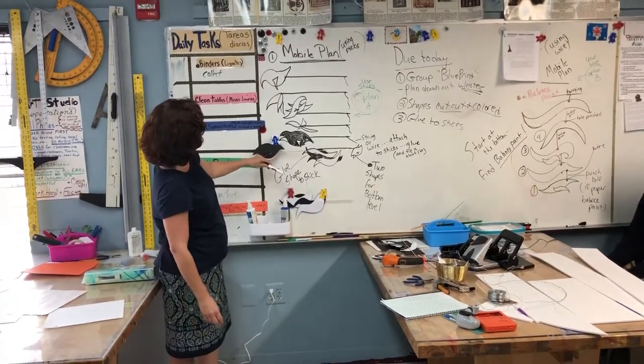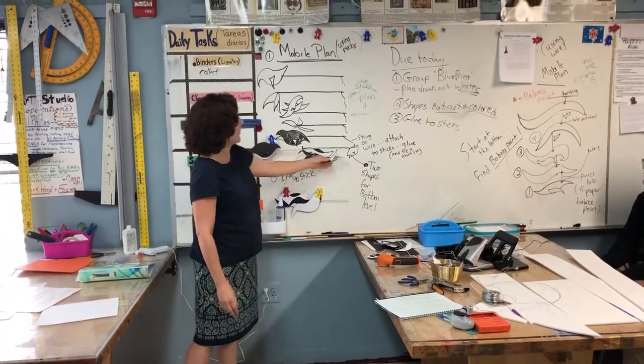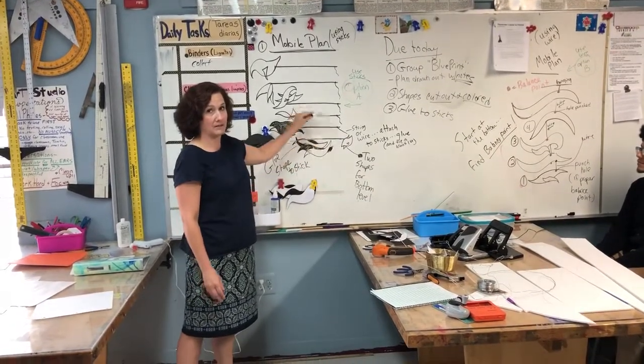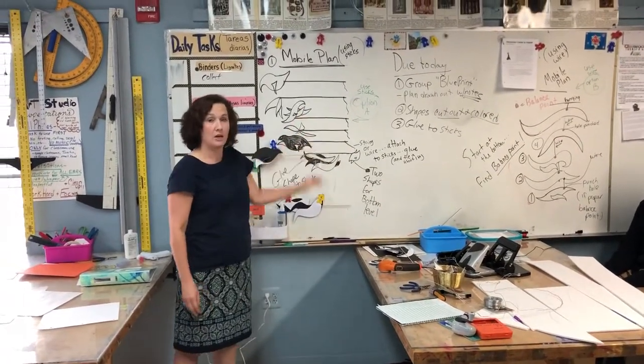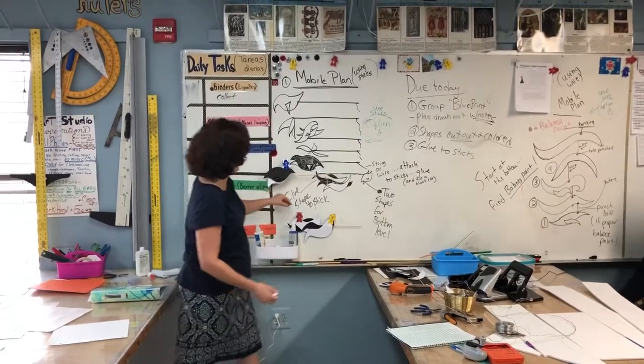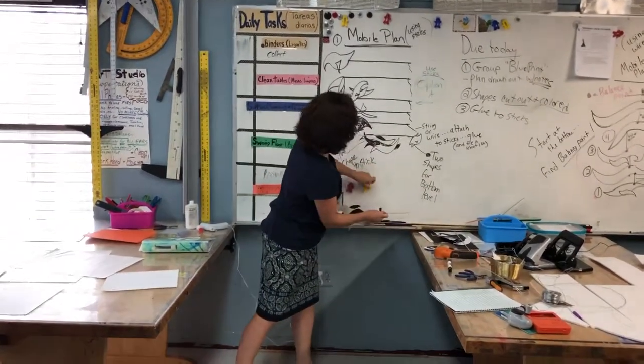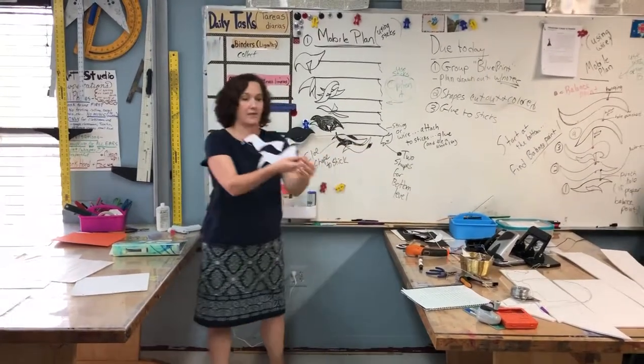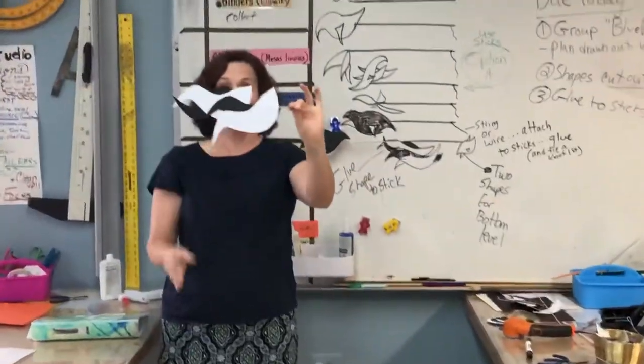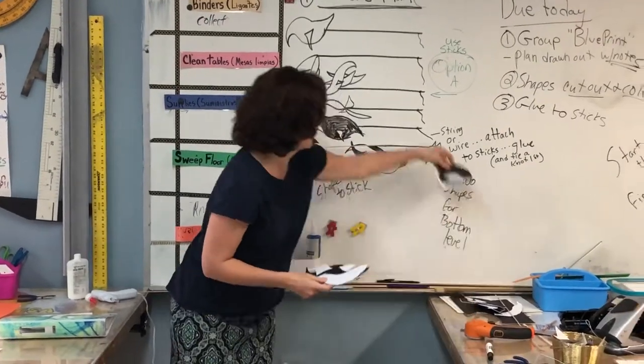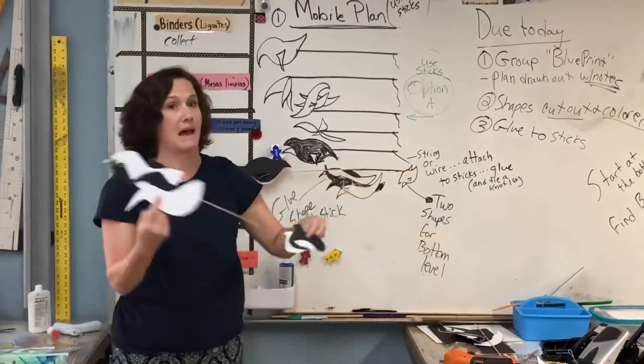The one goal though is you want to start at the bottom, and the reason is because then you'll find the balancing points for each when you attach them. So, what I did here was I decided, based on my drawing, that this shape would be on the bottom, and that's this one, and I would have a little teeny shape on the other side to balance it out.